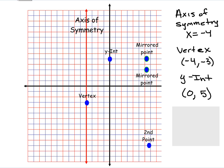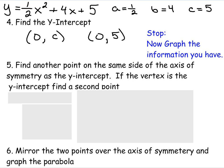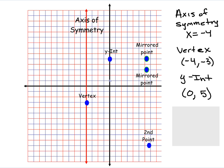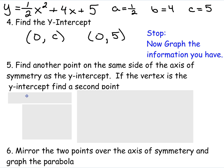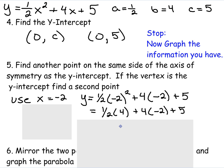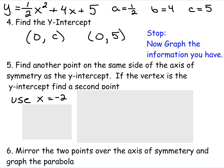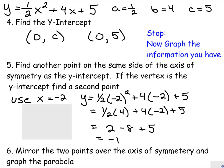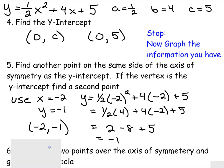Going back to our work, I'll choose a point on this side. I can choose any number between the axis of symmetry and the y-intercept, so I'll choose x equals negative 2. Plugging into the equation: one-half times negative 2 squared plus 4 times negative 2 plus 5. Working through the order of operations, 2 minus 8 plus 5 equals negative 1. So y is negative 1, and my second point is negative 2, negative 1.